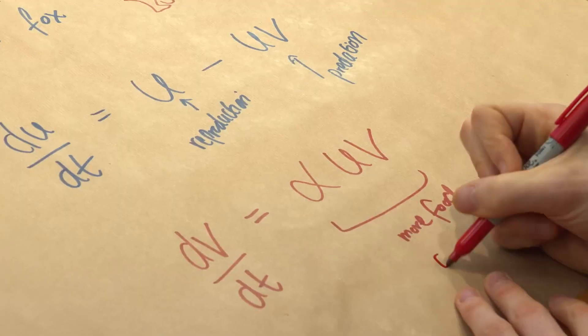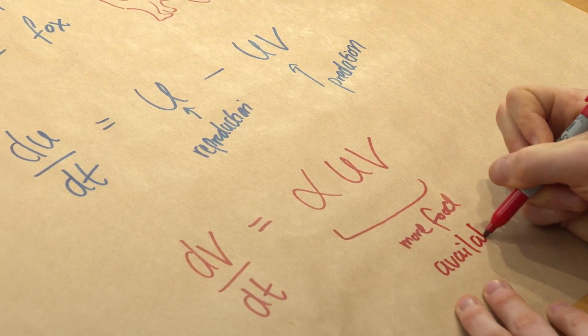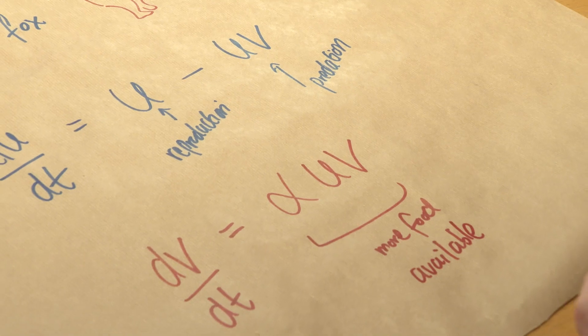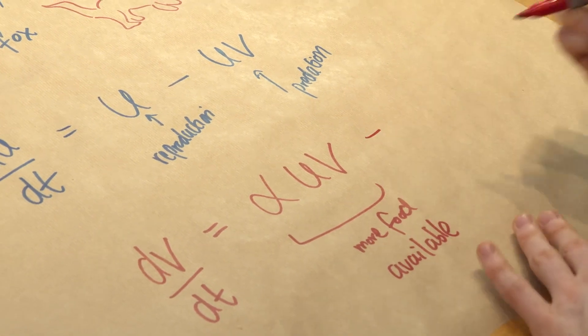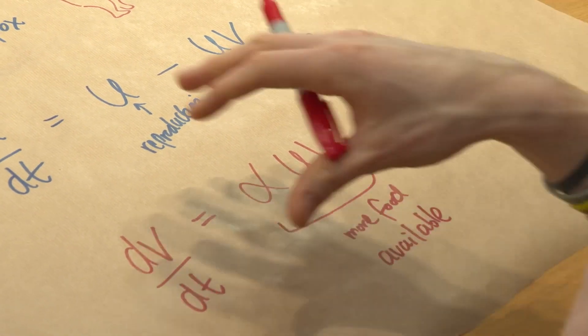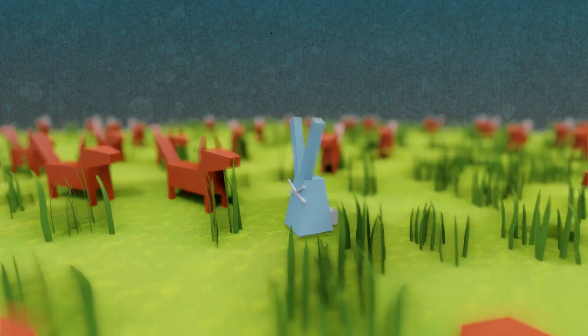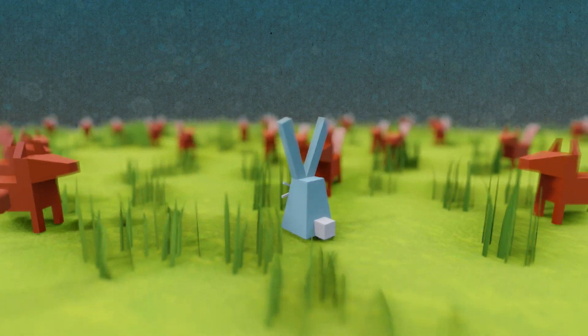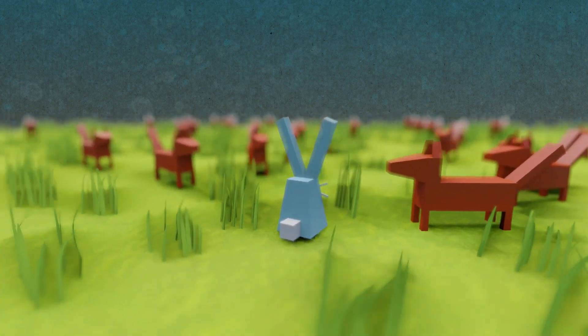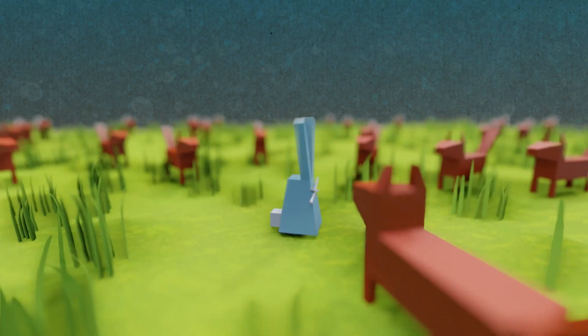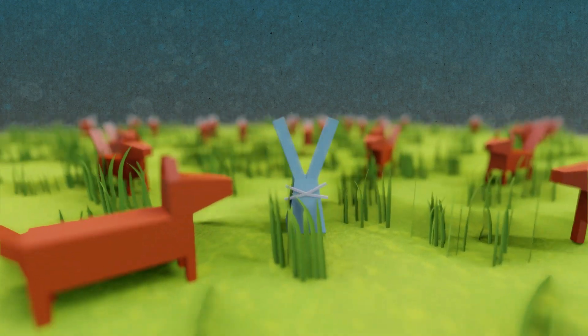This is a plus because it's going to increase the fox population, so more food available. And then now what you're going to see is the negative bits that cause the fox population to decrease is when there are too many foxes. Because if there are loads of foxes, there's a lot of competition for catching and eating the rabbits.